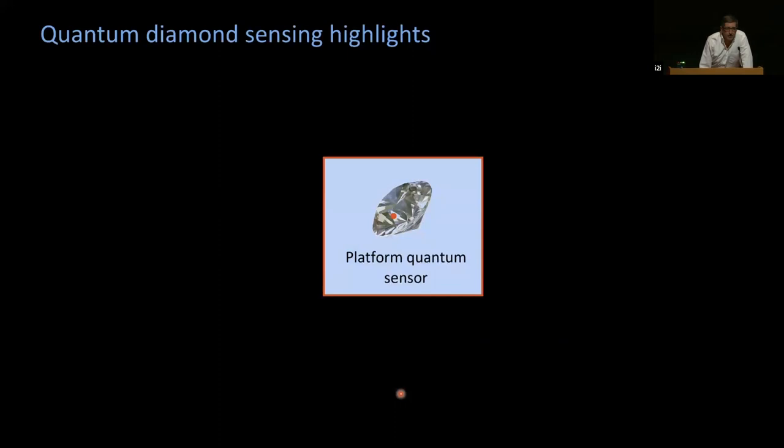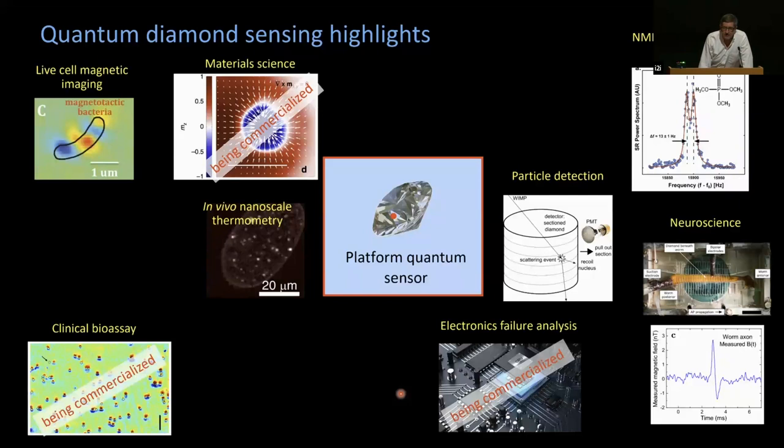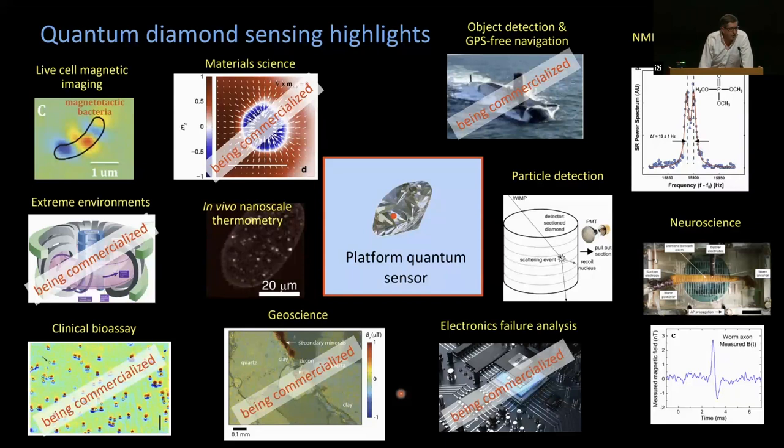Using NVs inside of diamond, these nitrogen vacancy color centers as sensors. It's about a 15-year-old field. Those papers were published in about 2008. It's now become one of the more mature and widely used technologies. I list here several of the highlights across many fields. There are dozens of groups around the world, mostly physical scientists, who are now using this platform quantum sensing technology for a variety of applications.